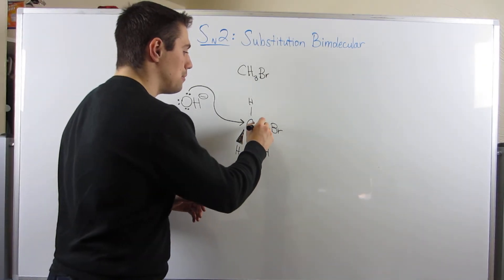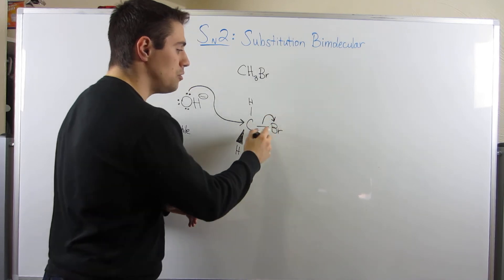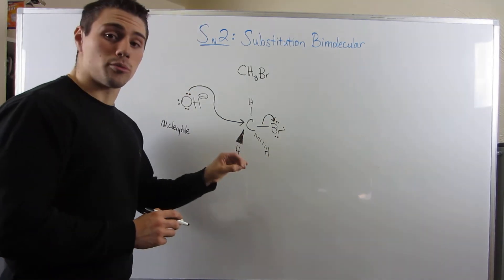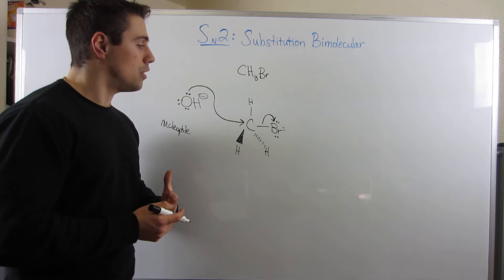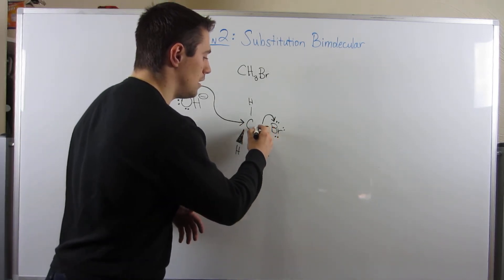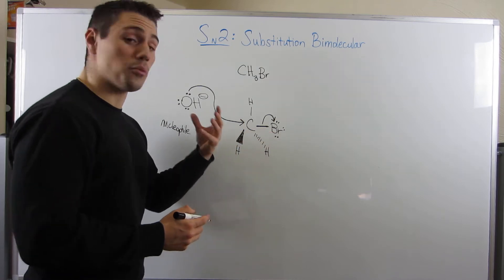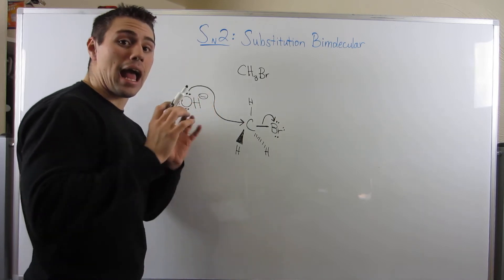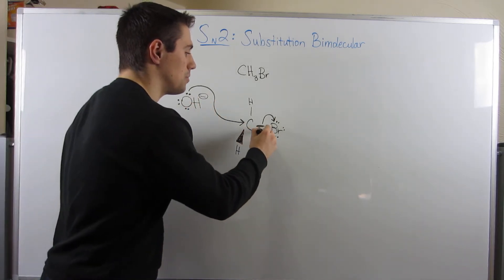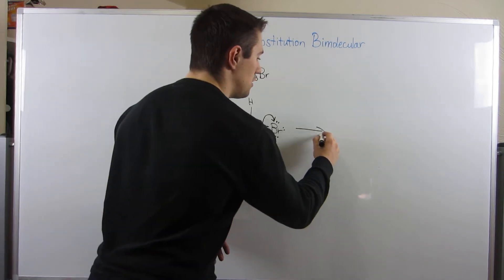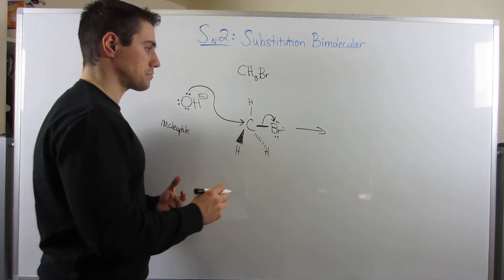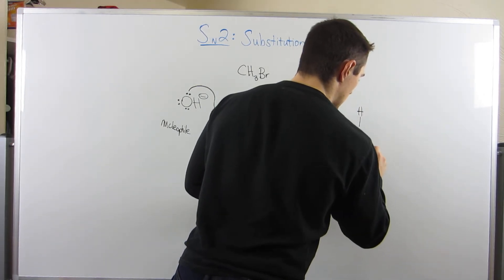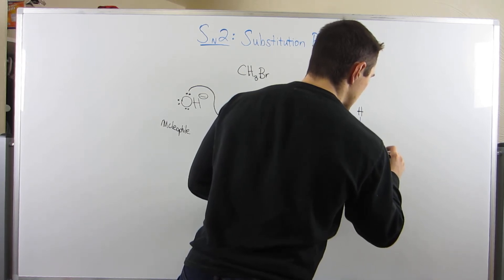This bromine right here has zero formal charge because he has seven electrons in his control. He's going to break his bond with this carbon and take these two electrons with him. So this bond from OH- is forming simultaneously while this bond between carbon and bromine is breaking. Here's the result of that electron flow.